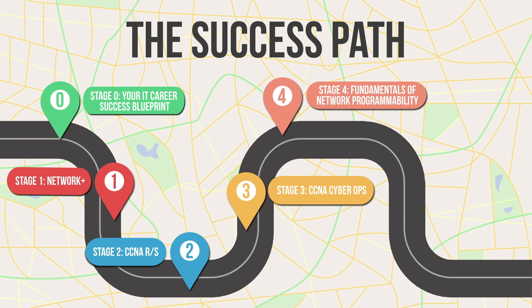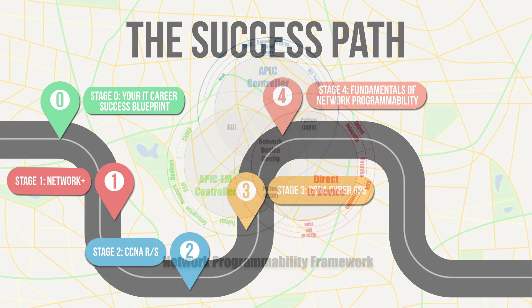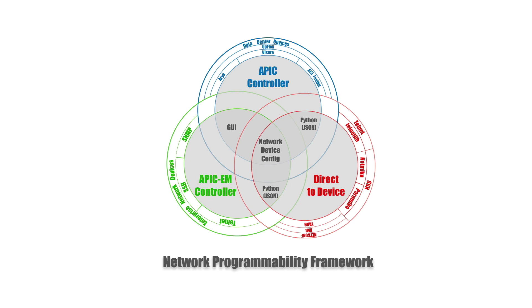We give our intent. Cisco calls it intent-based networking. For example, I have the intent of giving a certain application higher priority as compared to another application with lower priority. I can communicate my intent through a program or application, and that can be translated out to the network devices. I developed what I call the network programmability framework. The bottom line is we want to configure a network device, and in the Cisco world, we've got three primary ways of doing that.